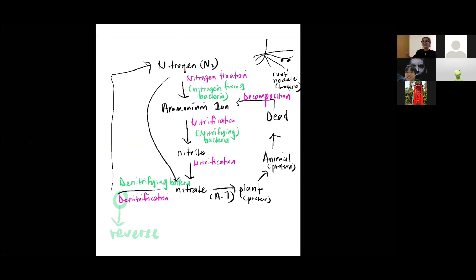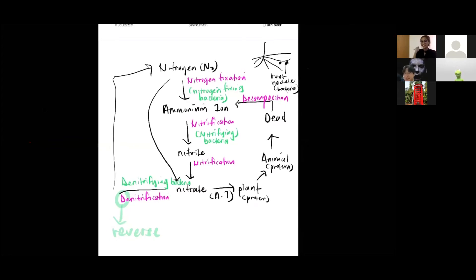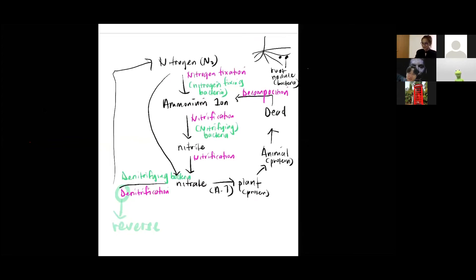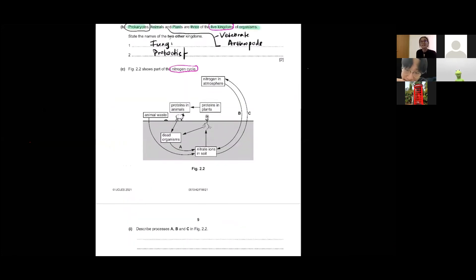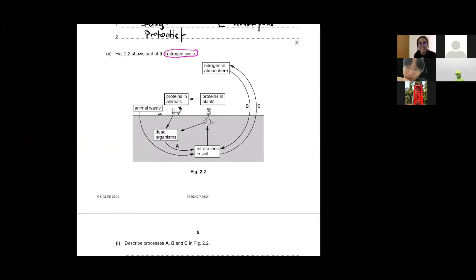Denitrifying bacteria convert nitrate back to nitrogen. Follow the arrow — the arrow shows you the conversion. Now that we understand the chart, let's answer the questions.